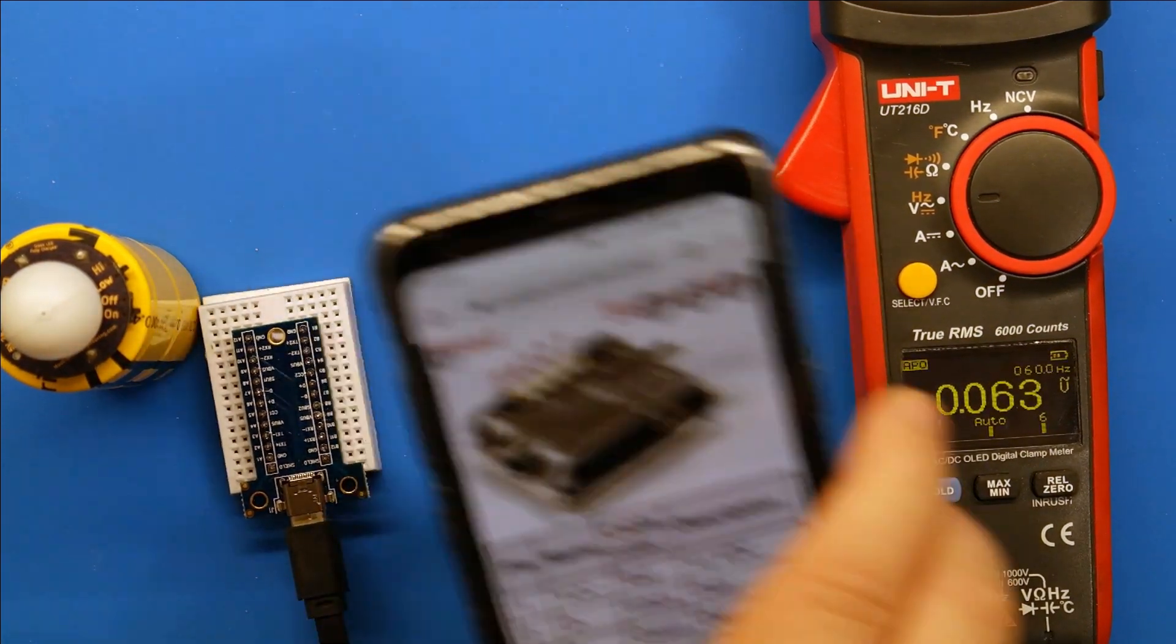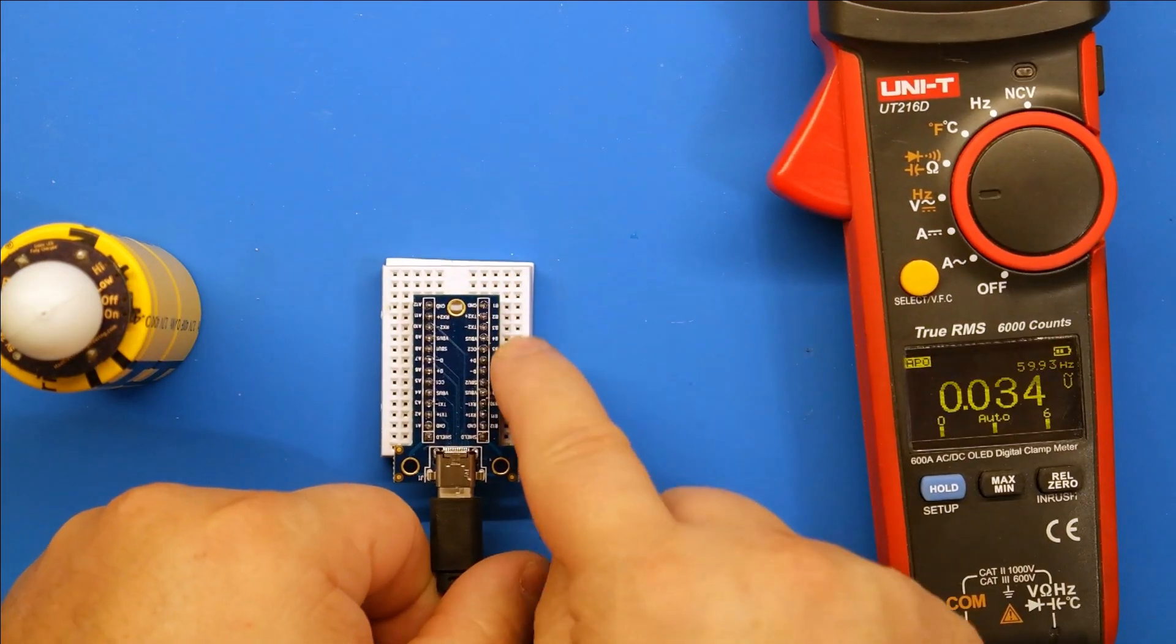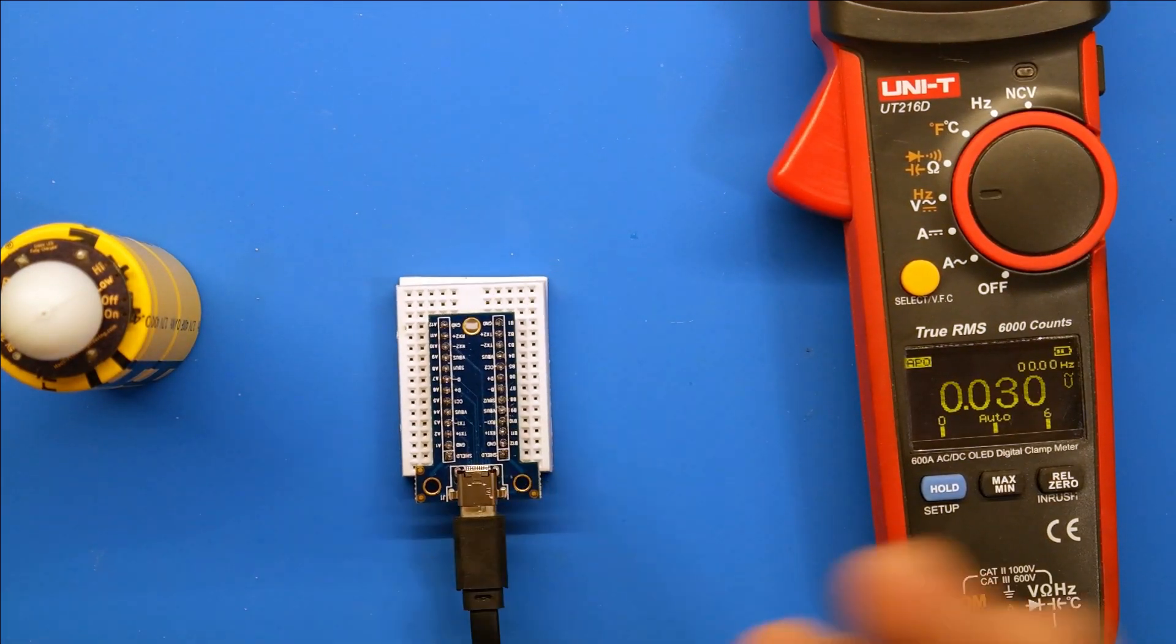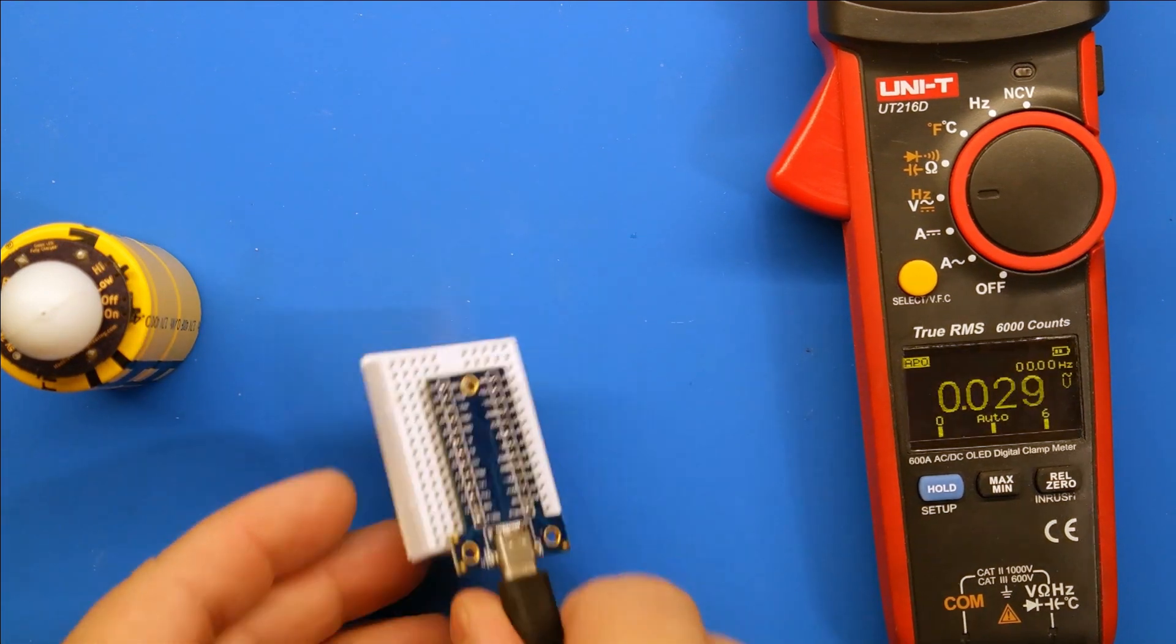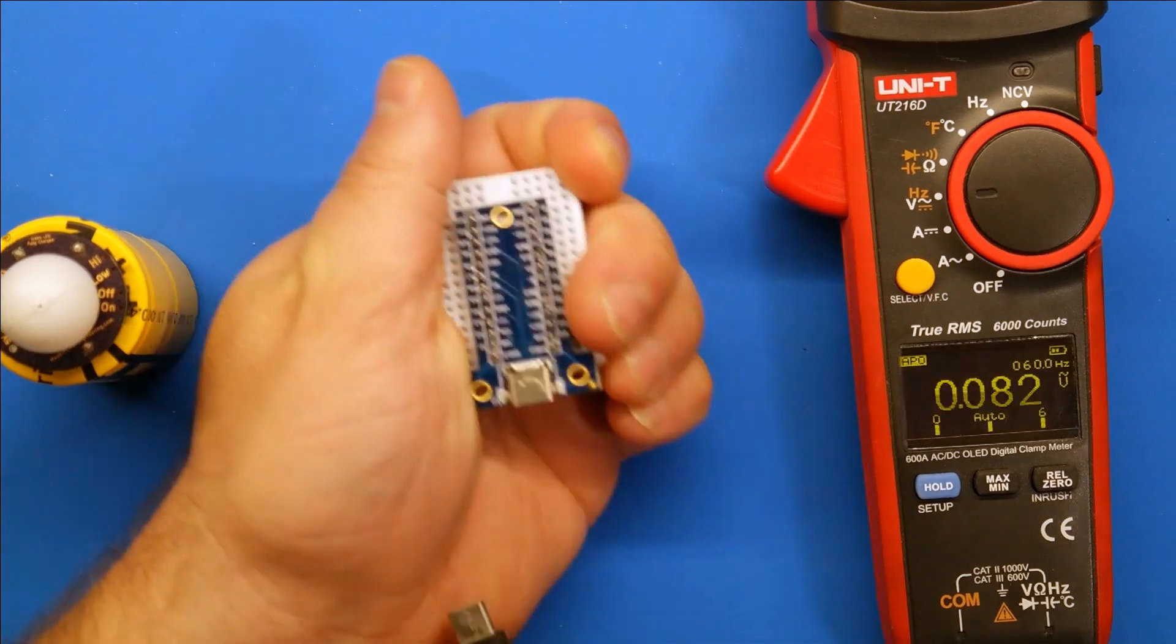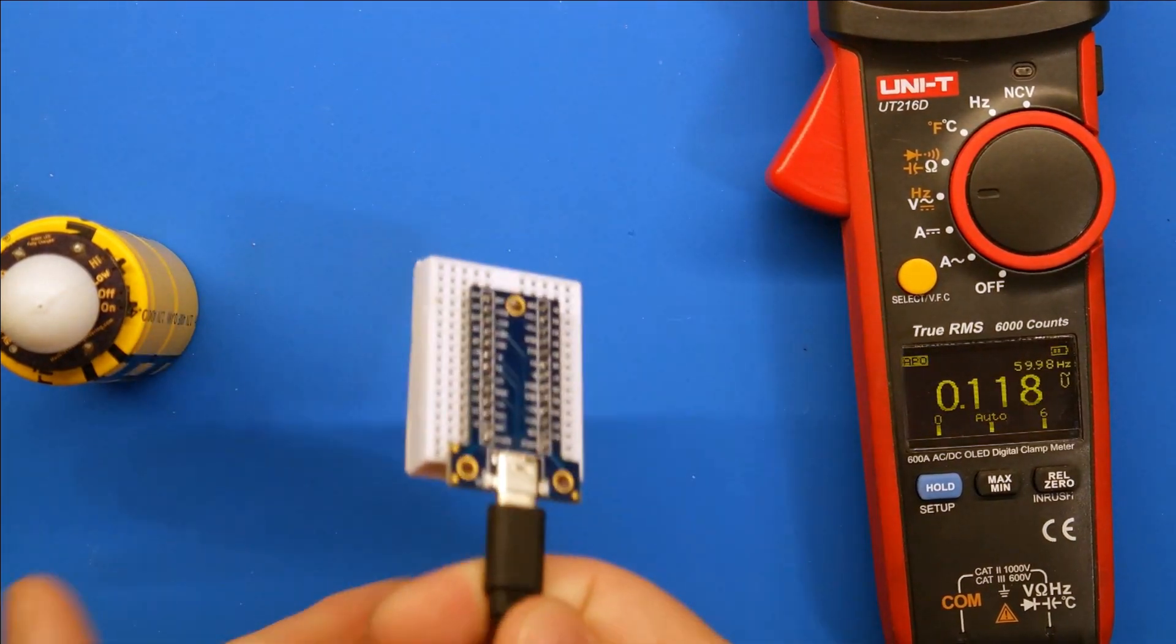Now when you move up to USB-C, look how many more pins you get. I think it's like 26 pins or so. It's insane because you have so many more data channels on here. Plus it's reversible. That's the great thing about USB-C. You can put it in either way.